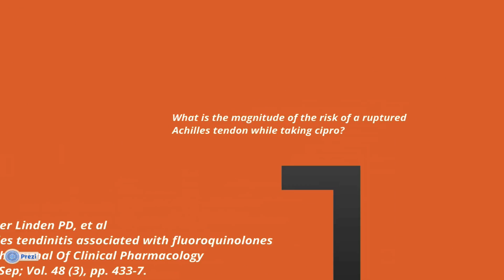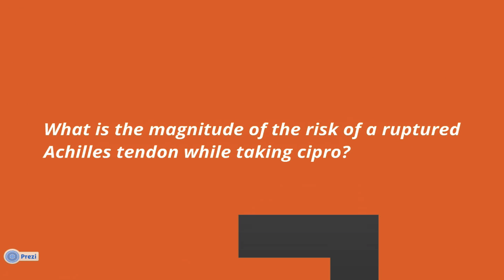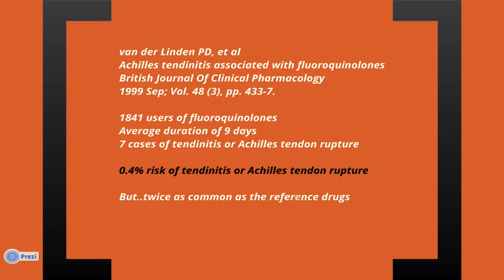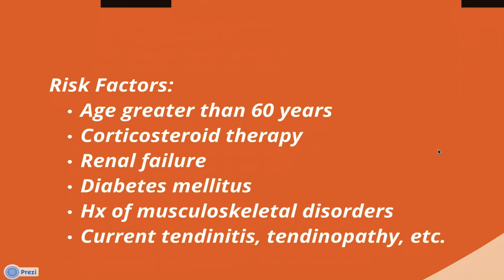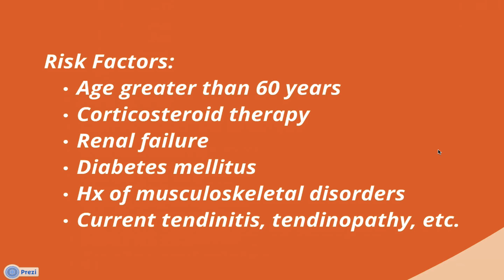We're not going to spend too much time talking about adverse reactions. It's difficult to get quantitative data on the risk of adverse reactions, but there is the famous side effect of fluoroquinolones — Achilles tendon rupture or tendinitis. Looking at a study published in the Journal of Clinical Pharmacology in 1999, there were almost 2,000 users of fluoroquinolones. The average duration was 9 days. There were 7 cases of tendinitis or Achilles tendon rupture, which is a 0.4% risk. The risk is very small, but it was still twice as great as the risk with other comparable antibiotics. Looking at risk factors for Achilles tendon rupture or tendinitis, these are things you should probably be thinking about before you recommend a fluoroquinolone to your patient.